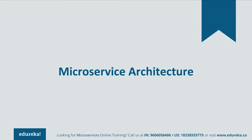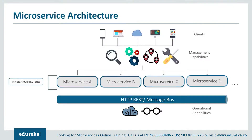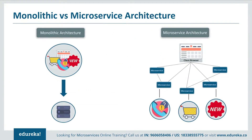Let's learn more about microservices by looking at different components of its architecture. The architecture starts with different clients from different devices trying to perform different management capabilities such as build, search, and notification. Each functionality is segregated into separate microservices handling their own data — for example, microservice A handles search, microservice B handles build, microservice C handles notifications. All these individual microservices have their own load balancing and execution environments, and communicate within themselves through REST or message bus to perform operational capabilities such as automation and monitoring. Client requests are passed to the internal architecture through an API gateway.